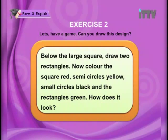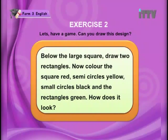Below the large square, draw two rectangles and you are going to get a beautiful design. Now color the square red, semi-circles yellow, small circles black, and the rectangles green. How does it look?